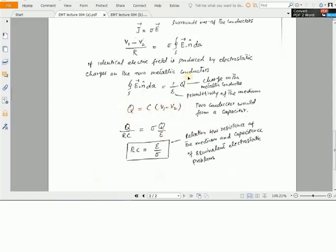Using this equation and comparing the two sides, we have Q over R equals sigma times Q over epsilon. And from here, RC equals epsilon over sigma. This is the relation between the resistance of the medium and the capacitance of the equivalent electrostatic problem. Here you can see that the right-hand side represents the conductivity in the system. Here the current flows, and this is its equivalent electrostatic part with resistance R and capacitance C.